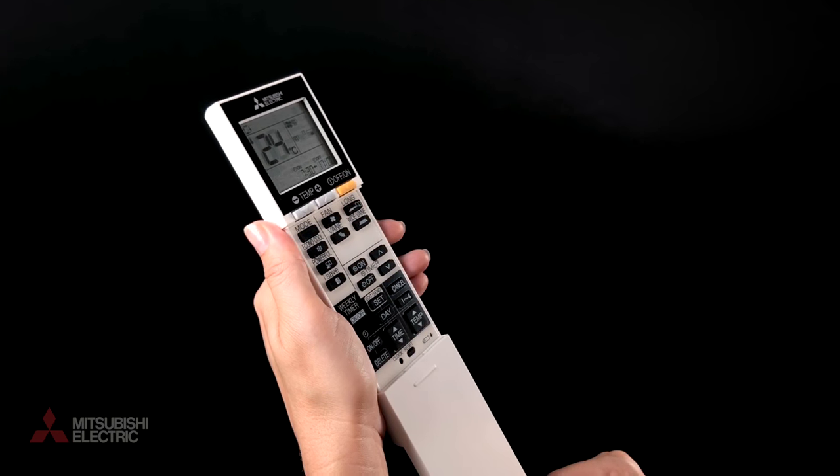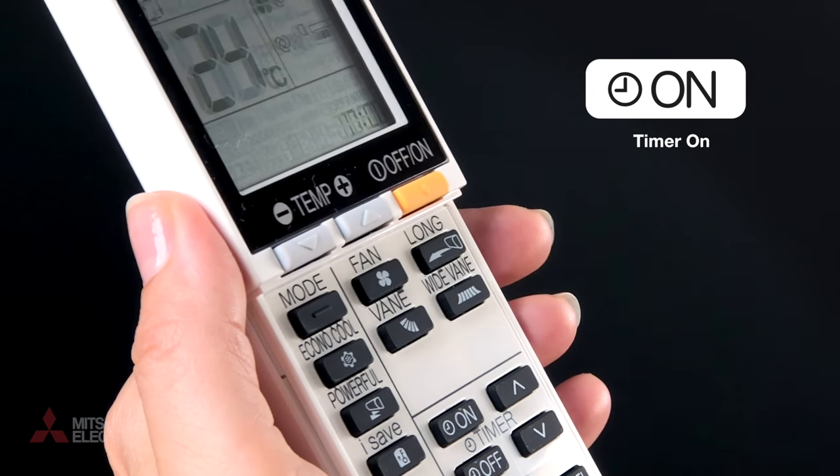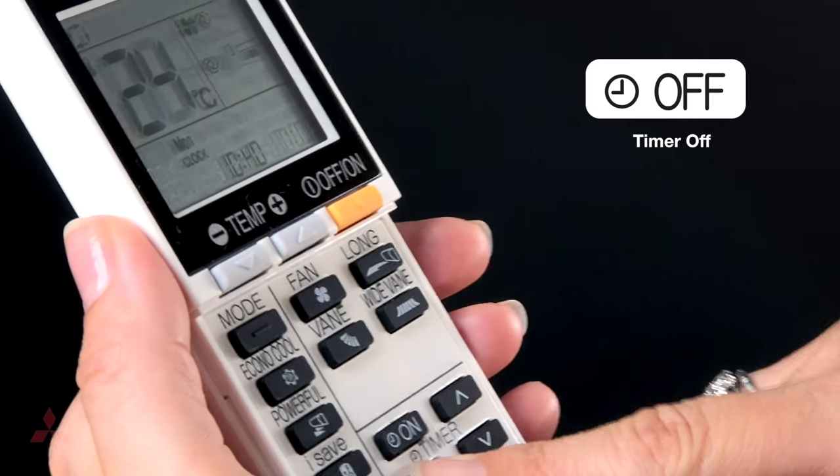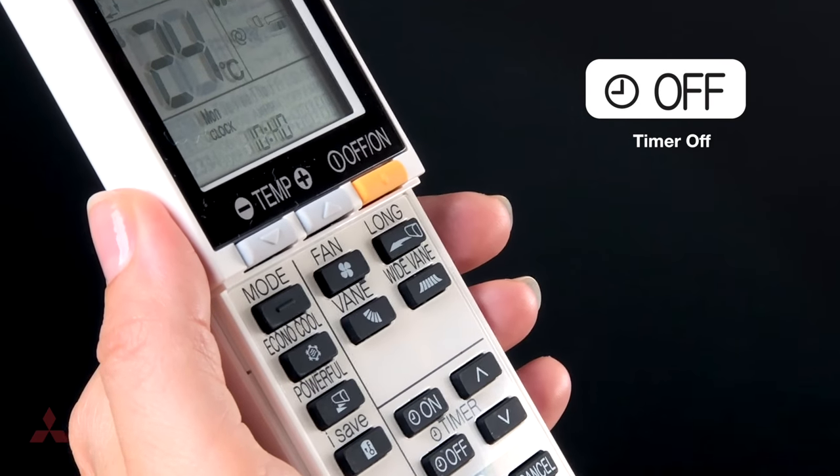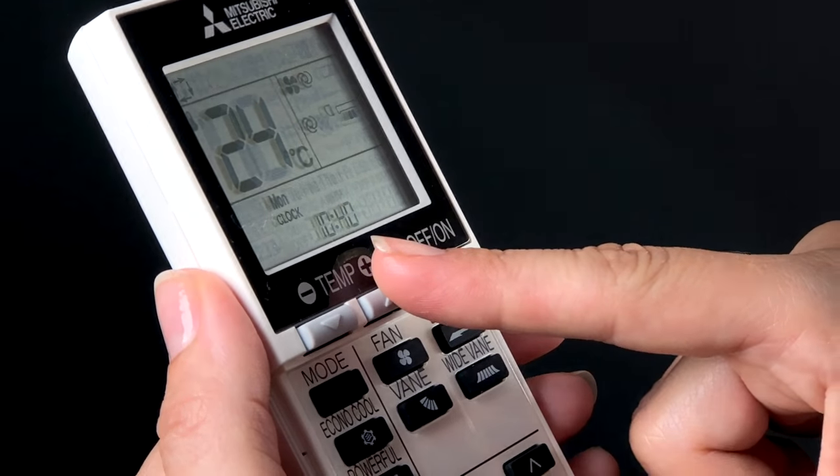To cancel the timer inputs, press timer on once to cancel that input and timer off once to cancel that input. The display will then revert back to the clock and you can operate manually again.